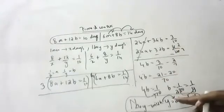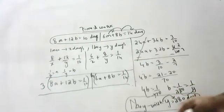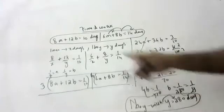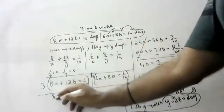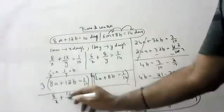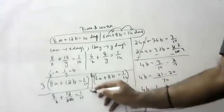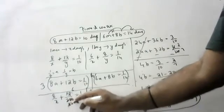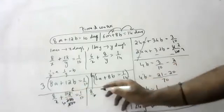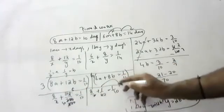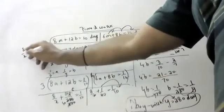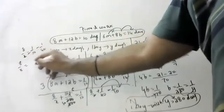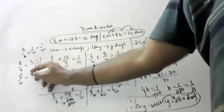Now substitute b = 1/280 back into one of the original equations to find x. Using the first equation: 8/x + 12/280 = 1/10, which gives 8/x = 1/10 − 12/280 = 1/10 − 3/70. The LCM of 10 and 40 is 40, so 8/x = (4 − 1)/40 = 3/40.